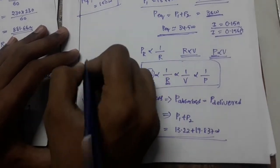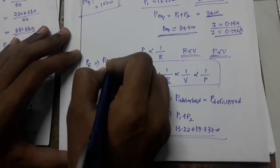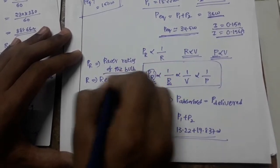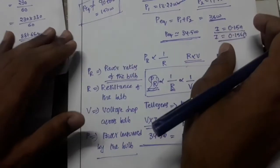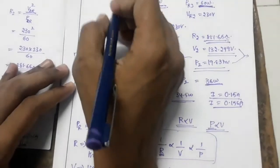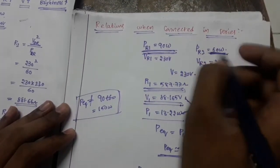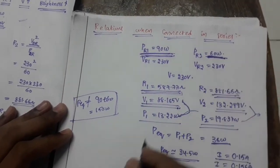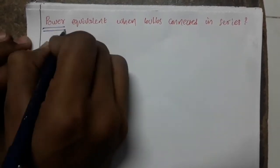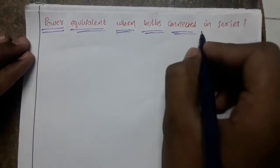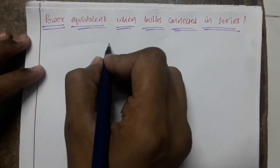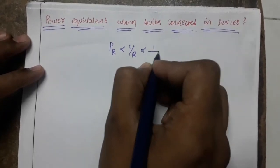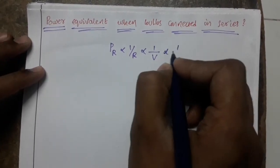And PR defines power rating of the bulb. Again, friends, please don't add these ratings and say that is the total power — this is not the actual power consumed by the two bulbs, this is only the rating. Power equivalent when the bulbs are connected in series: power rating is inversely proportional to resistance, inversely proportional to voltage drop across the bulb, and inversely proportional to power consumed by the bulb.